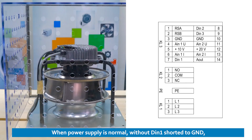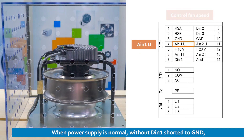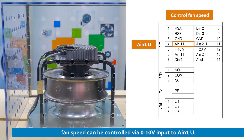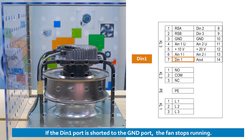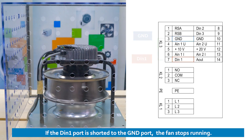When the power supply is normal and DIN1 is not shorted to GND, fan speed can be controlled via 0-10V input to AIN1U. If the DIN1 port is shorted to the GND port, the fan stops running.